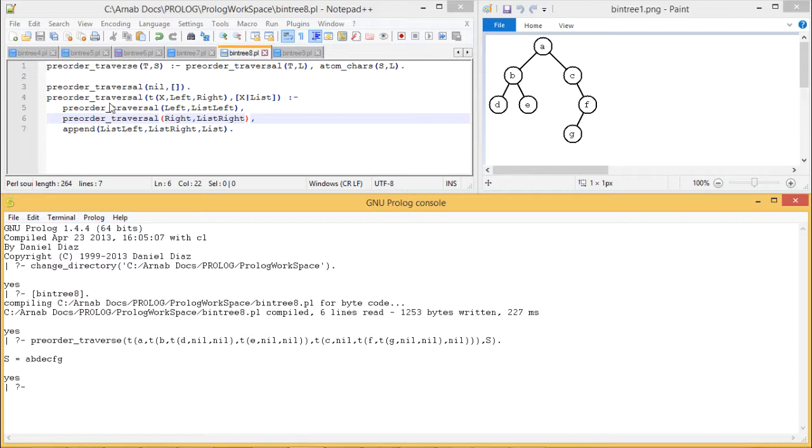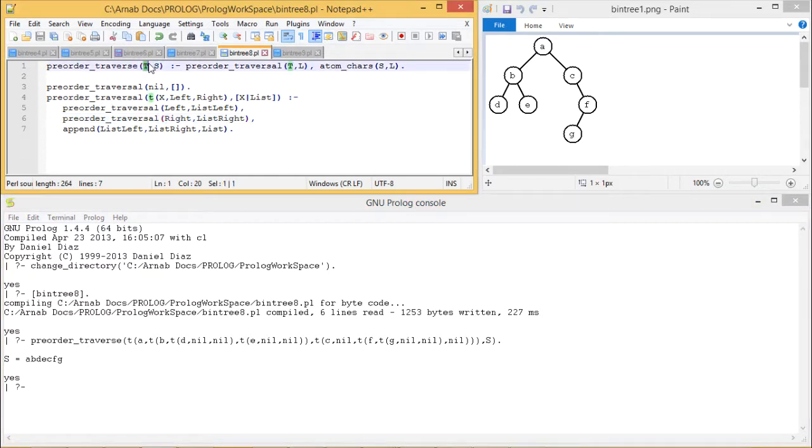So let me explain the program code. Pre-order traversal is taking T as input and S will be the output argument. We are calling pre-order traversal, so that means these clauses are being called which is having this T and L will be the output. If the tree is empty, then the set will contain nothing. It will be a null set.